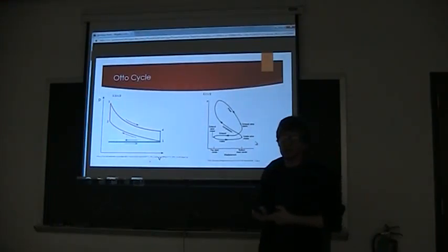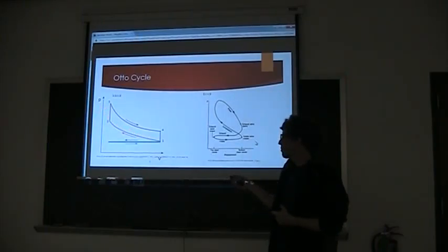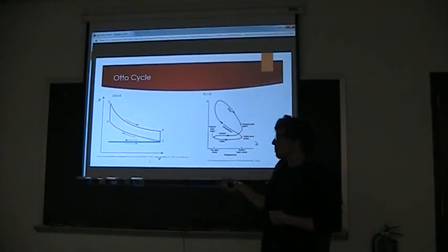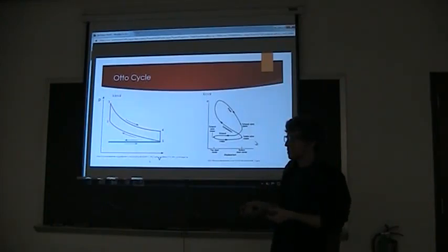So the graph that we were just looking at was an ideal cycle. A couple things that make it ideal is that going from one to two and from three to four, it is work that's both reversible and adiabatic, making this line right here an isentrope for each one. So S1 and S2 values are going to be the same, and S3 and S4 values are going to be the same as well.